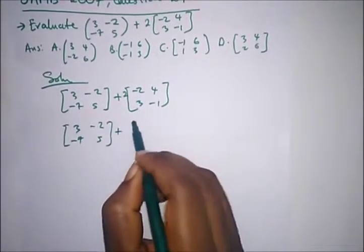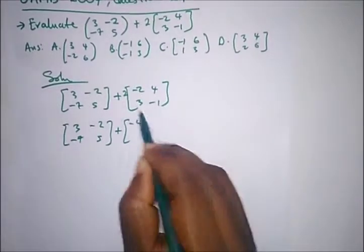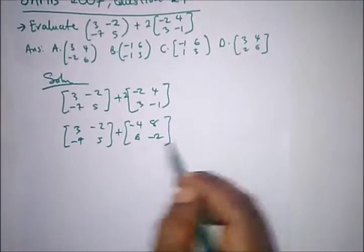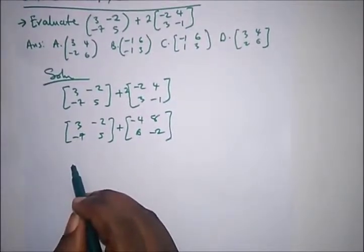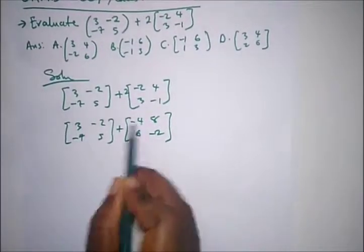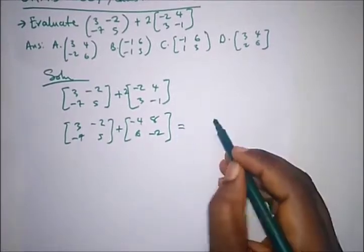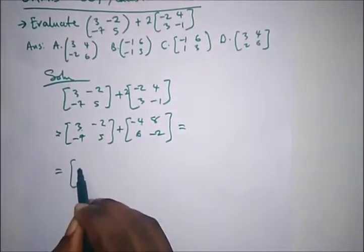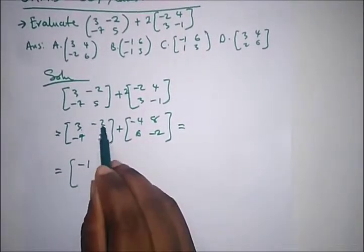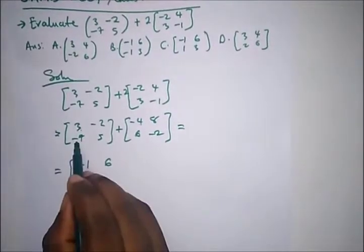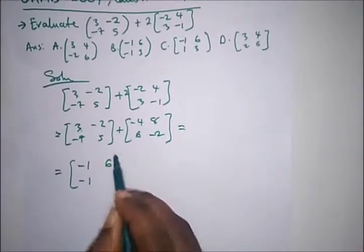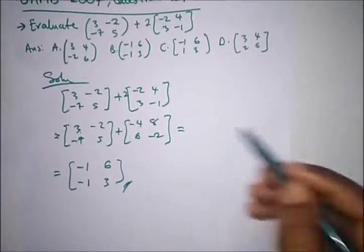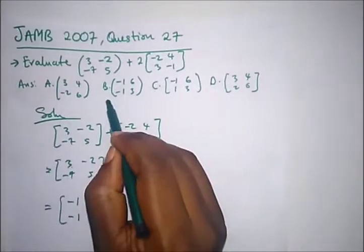Multiplying everything: two times minus two gives minus four, two times four gives eight, two times three gives six, and two times minus one gives minus two. Now adding — remembering our first topic, introduction — we just add corresponding elements. So: three plus minus four gives minus one, minus two plus eight gives six, minus seven plus six gives minus one, and five plus minus two gives three. So our answer is option B.